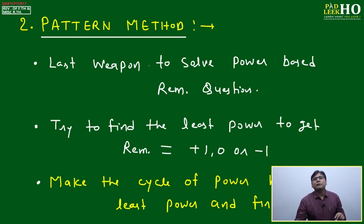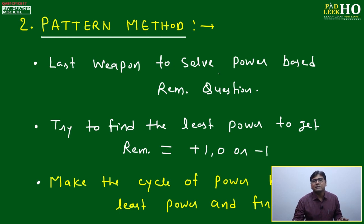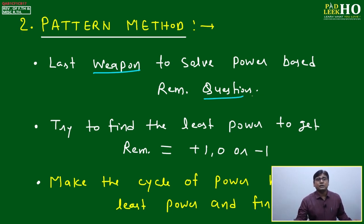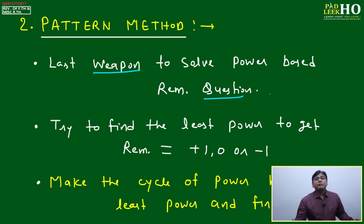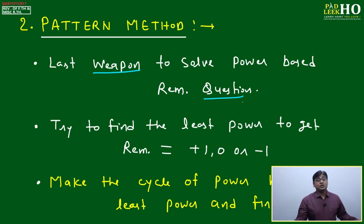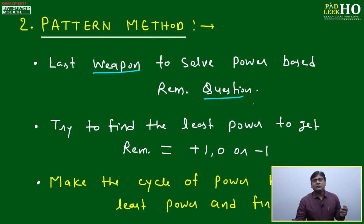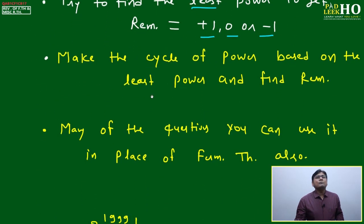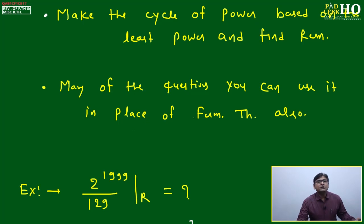Now moving to the second point: the Pattern Method. The pattern method is your last weapon — your reserve weapon — for solving power-based remainder questions. If you cannot apply Fermat's theorem, Reverse of Fermat's theorem, last two digits, co-prime, or Euler number concepts, come to the pattern method. The key idea is to find the least power of the numerator that gives remainder +1, -1, or 0.